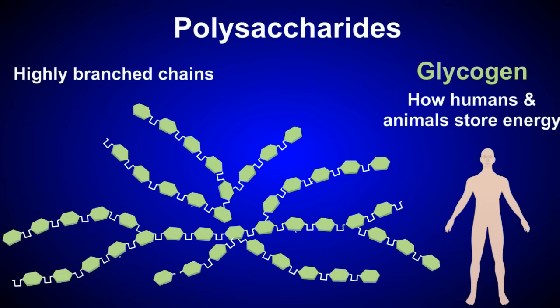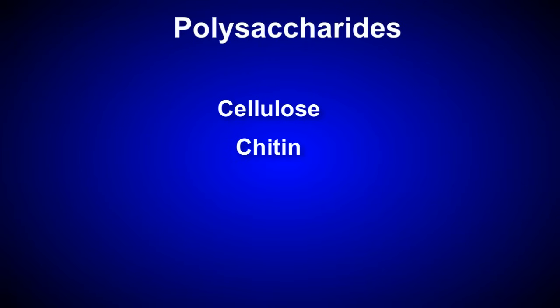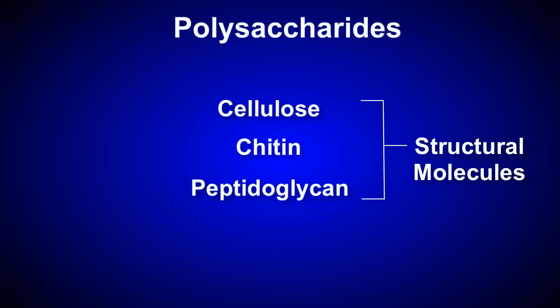Animals differ from plants in that they store energy in the form of glycogen, which is a highly branched polysaccharide that can be broken down quickly to supply energy to tissues. Other polysaccharides, such as cellulose, chitin, and peptidoglycan, serve as structural molecules in organisms.